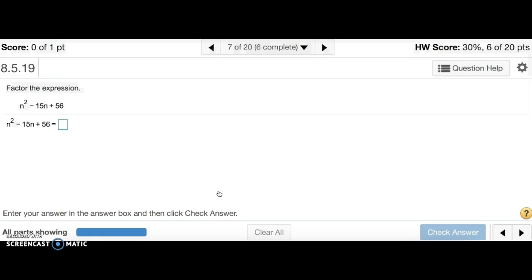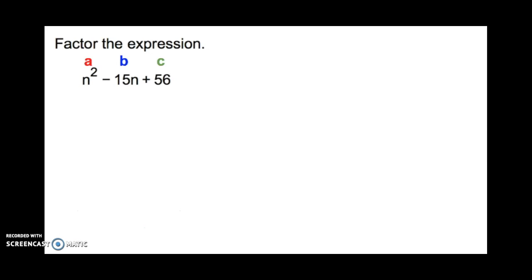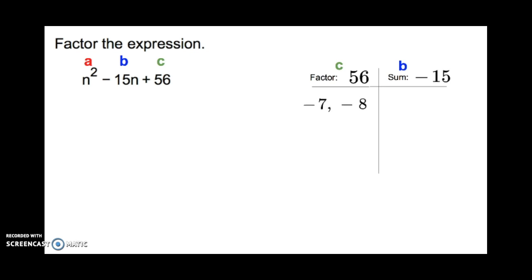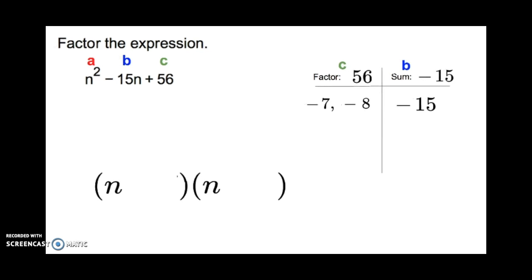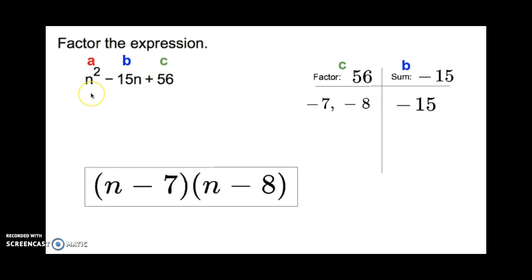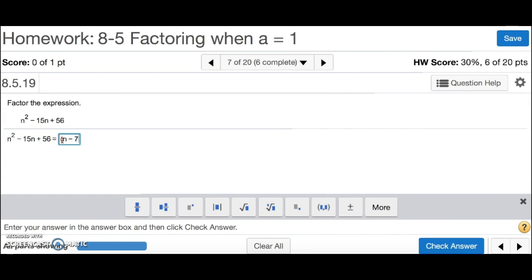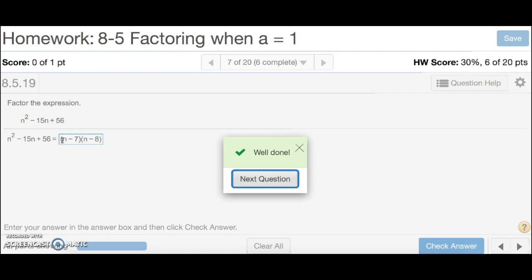Number 7, same deal. We have a, b, and c in our table. Our factor c is 56 and our sum is negative 15. Like the last problem, we need two negative numbers — negative 7 and negative 8 add up to negative 15. The answer is n minus 7 times n minus 8. Notice I'm using n's because I have n's in my problem — be careful not to use x. And that's number 7.